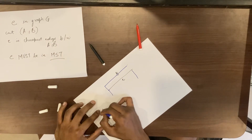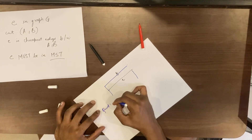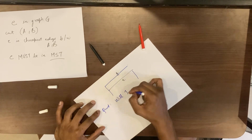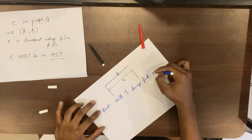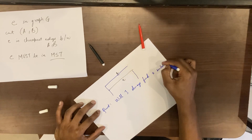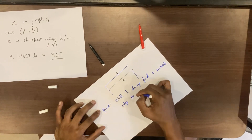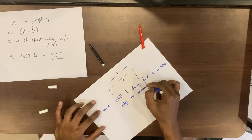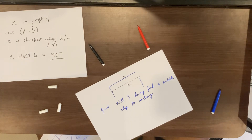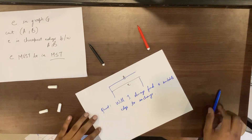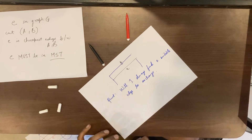The question now arises: will we always find a suitable edge to exchange? Why can we always find an edge that is cheaper and a suitable edge to exchange with? The answer is yes.